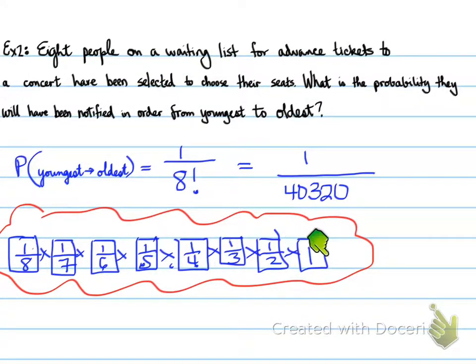8 factorial is the total possible number. So we have 1 in 40,320 that definitely they were chosen from youngest to oldest. That's very low odds. Continuing on.